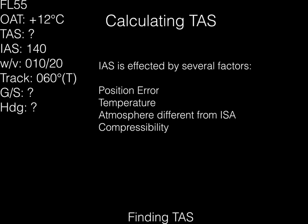Okay, so here's the thing, we've got the question data we're given on the site. Flight level 55, outside air temperature +12°C, a TAS that we don't know, indicated airspeed 140 knots, wind velocity and direction being 010/20 knots, track being 060 degrees true, and we need to find the ground speed and the heading.